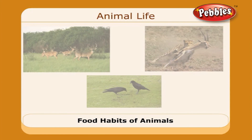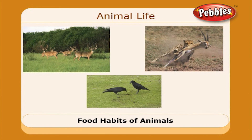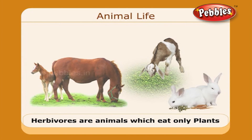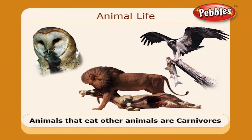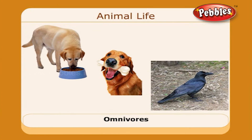Let us now see the food habits of animals. There are three varieties: herbivores, carnivores, and omnivores. Herbivores are those animals which eat only plants. The animals that eat other animals are called carnivores. Some animals eat plants and also other animals — for example, the crow eats rice and also the flesh of other animals. These are called omnivores.